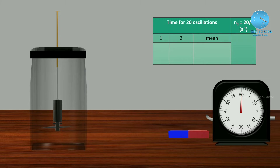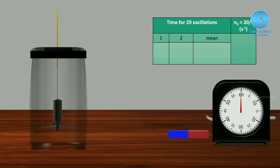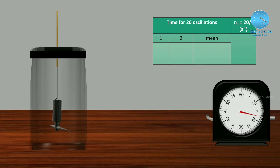We perform small oscillations with the magnet. We count 20 oscillations and note the corresponding time period using a stop clock. We remove the bar magnet, then record the time for 20 oscillations. We get a time period of 35 seconds for 20 oscillations.